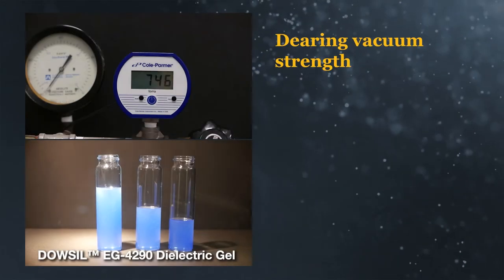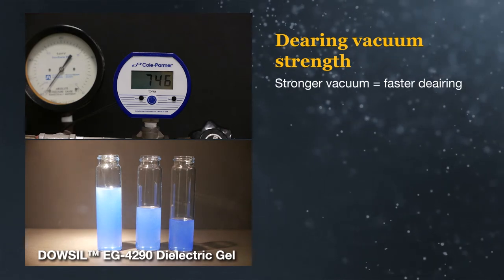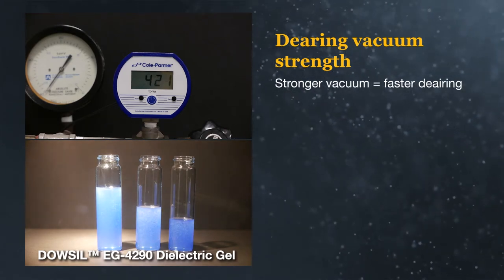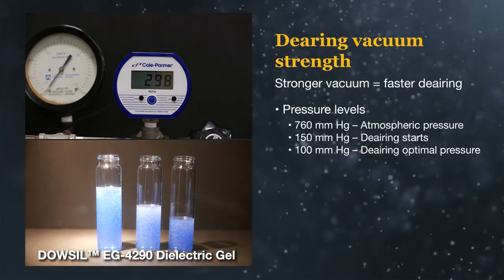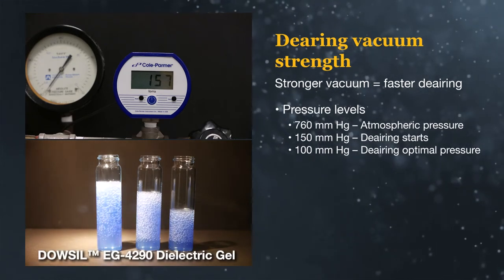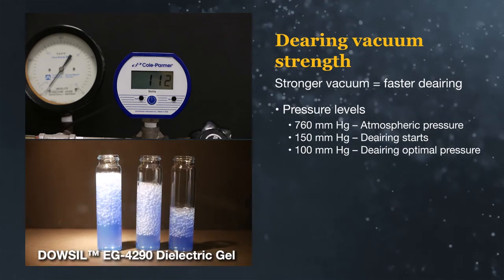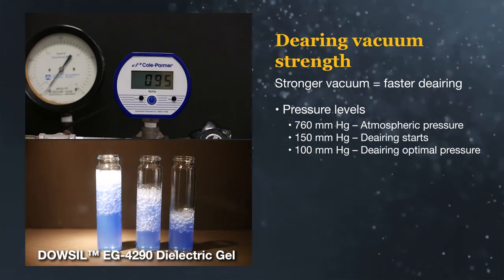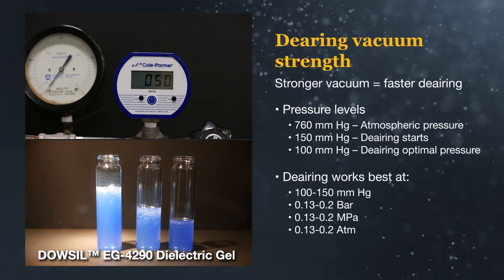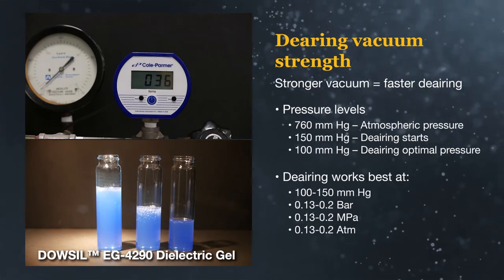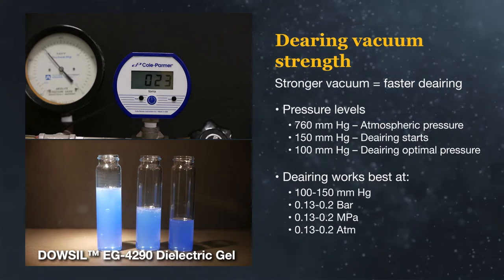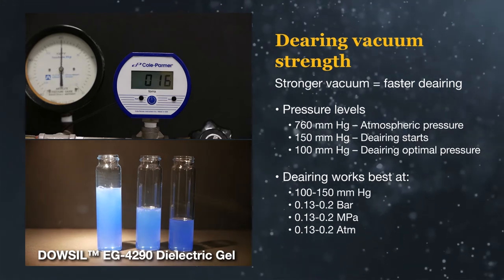When de-airing, the stronger the vacuum that is applied, the faster air will evacuate the system. Sea level atmospheric pressure is 760 millimeters of mercury, and de-airing often starts once the pressure reaches 150 millimeters of mercury. It is usually completed quickly when pressures reach 100 millimeters of mercury. How fast the chamber reaches these pressures depends on the chamber size and vacuum strength.